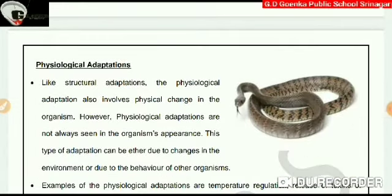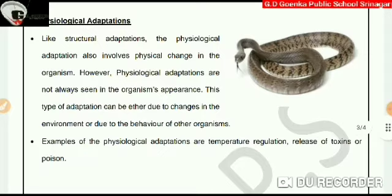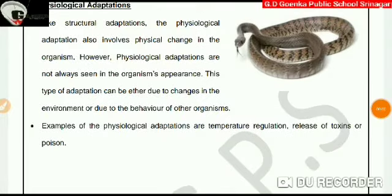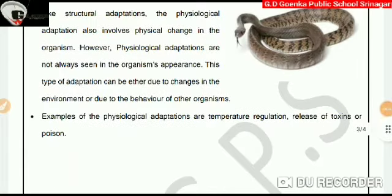The last type of adaptation is physiological adaptation. Like structural adaptations, physiological adaptation also involves physical change in the organism. However, physiological adaptations are not always seen in the organism's appearance. This type of adaptation can be either due to a change in the environment or due to the behavior of other organisms. Examples of physiological adaptations are temperature regulation and release of toxins or poison.